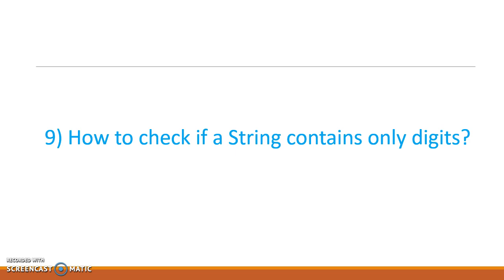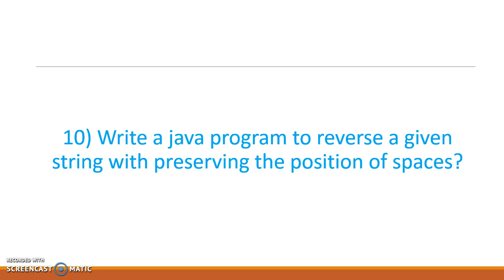Ninth, how to check if a string contains only digits. We need to check — suppose the string is '123', it contains only digits. But if the string is 'a12', it contains both characters and digits. We need to identify strings that contain only digits. Tenth, write a Java program to reverse a given string while preserving the position of spaces — unlike simple reversal, here we preserve the positions of spaces.